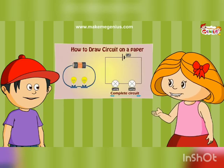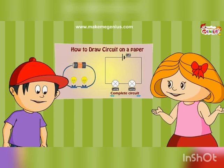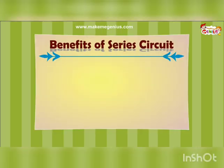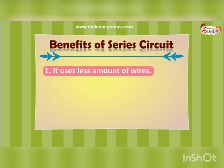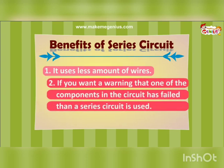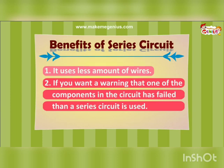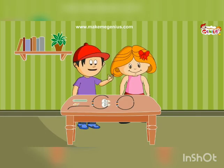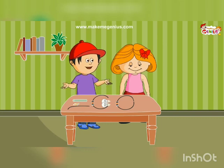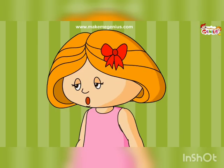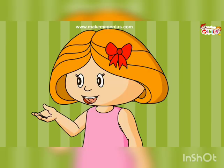Like I told you, this is known as series circuit. Any benefit from this kind of circuit? There are two benefits. One, it uses less amount of wires. And the second advantage is that if you want a warning that one of the components in the circuit has failed, then the series circuit is used. Now I understand all about this simple circuit.